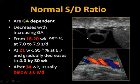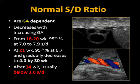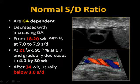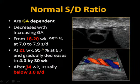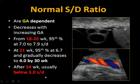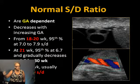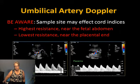The S/D ratio is gestational age dependent — it decreases with increasing gestational age. From 18 to 20 weeks, the 95th percentile is about 7; at 21 weeks about 6, decreasing to about 4 at 30 weeks, and after 34 weeks it should usually be below 3. You can go to perinatology.com, put in the gestational age, and it'll tell you the normal ranges. Just be aware it changes over gestational age.